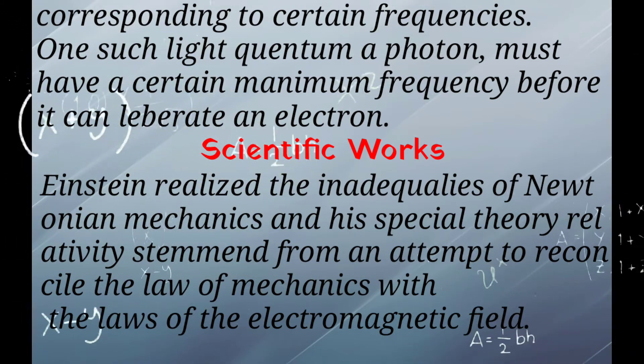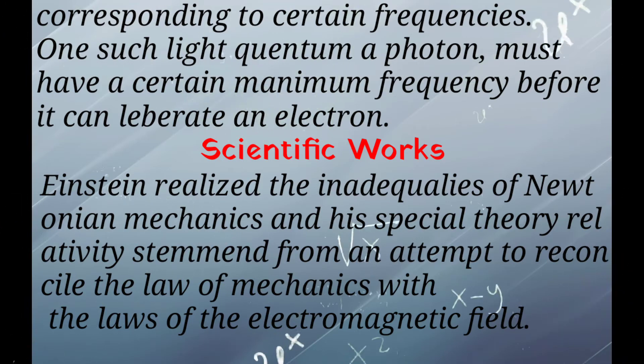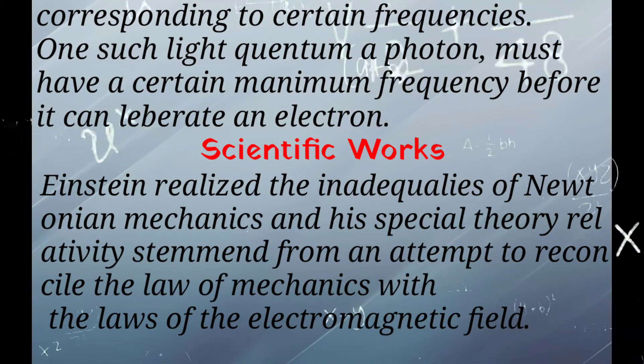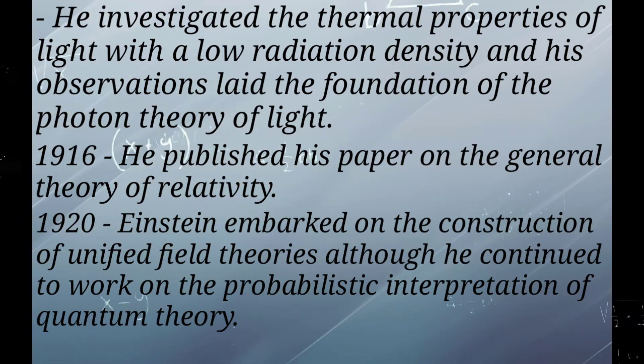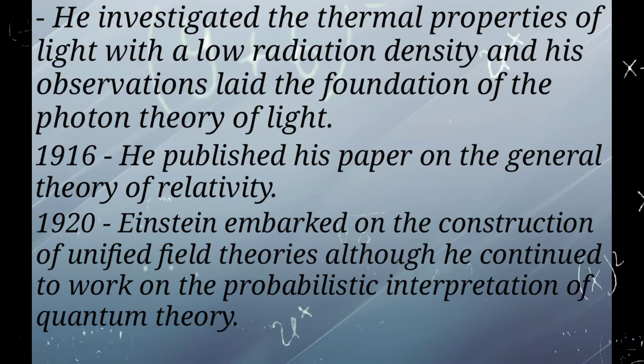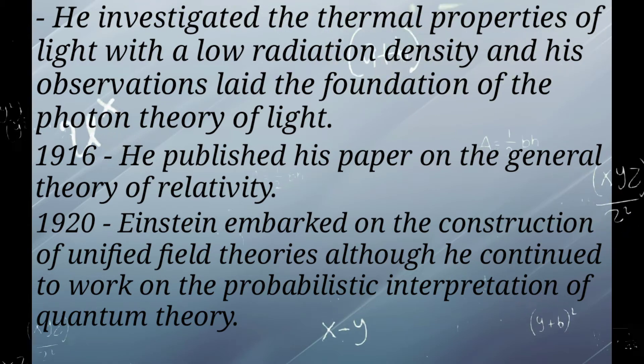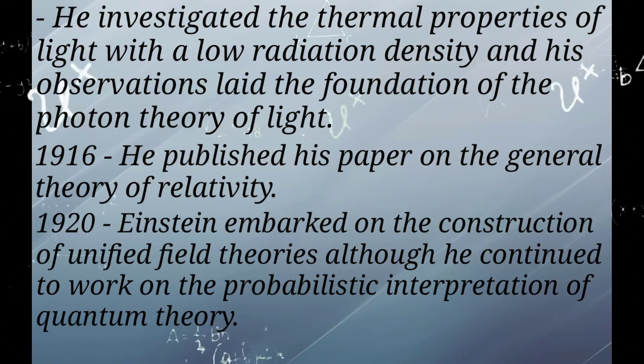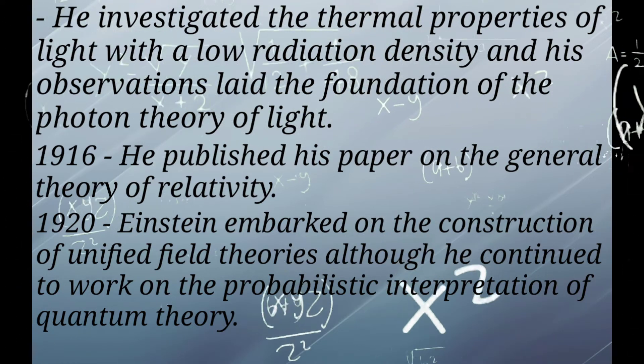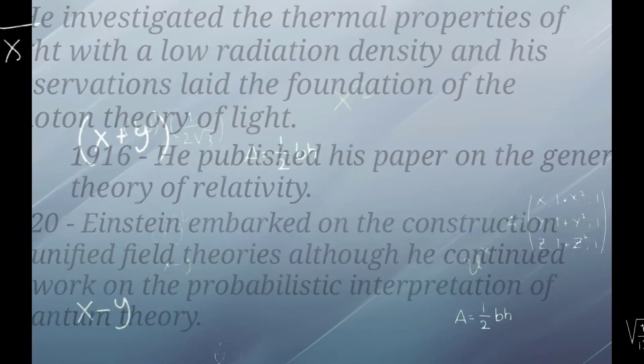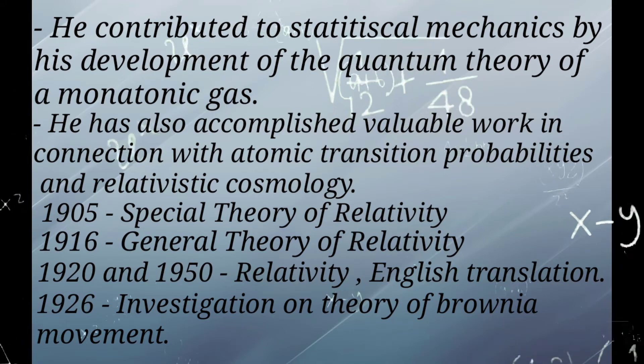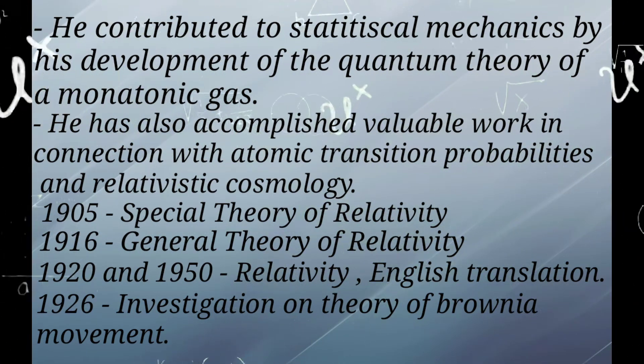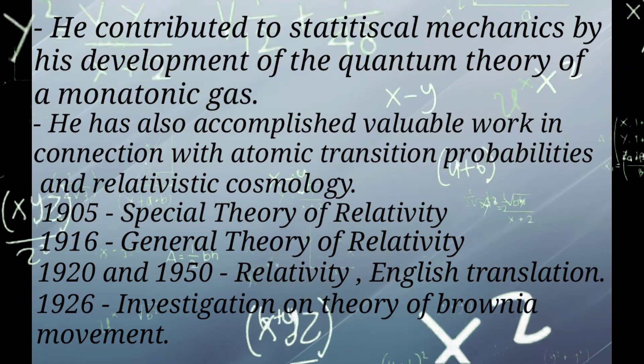Scientific works. Einstein realized the inadequacies of Newtonian mechanics and his special theory of relativity stemmed from an attempt to reconcile the laws of mechanics with the laws of the electromagnetic field. He investigated the thermal properties of light with a low radiation density and his observations laid the foundation of the photon theory of light. In 1916, he published his paper on the general theory of relativity. In the 1920s, Einstein embarked on the construction of unified field theories, although he continued to work on the probabilistic interpretation of quantum theory. He contributed to statistical mechanics by his development of the quantum theory of a monoatomic gas. He also accomplished valuable work in connection with atomic transition probabilities and relativistic cosmology.